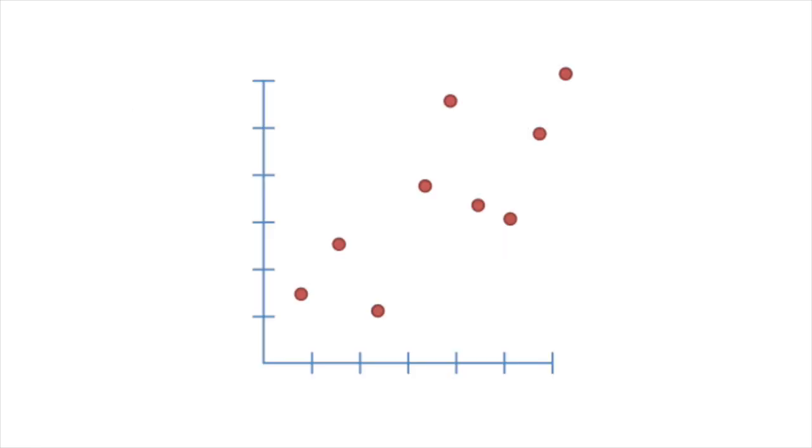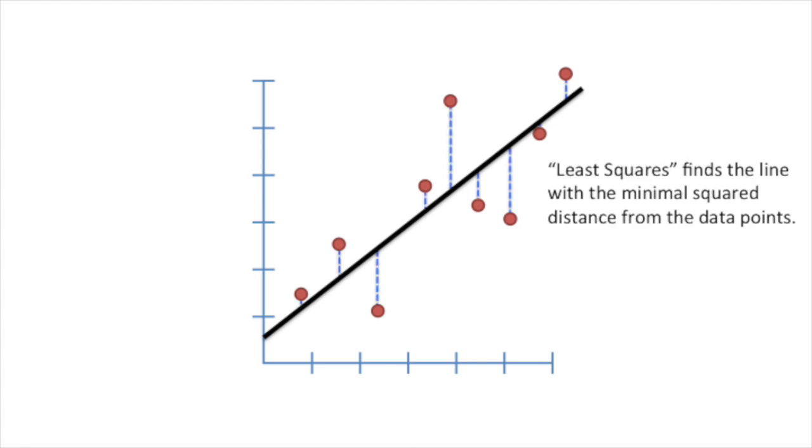Last time we talked about fitting a line to data. We used least squares to find the line with the minimal square distance from the data points. Psst, if this is news to you, check out the STATQuest: Fitting a Line to Data.